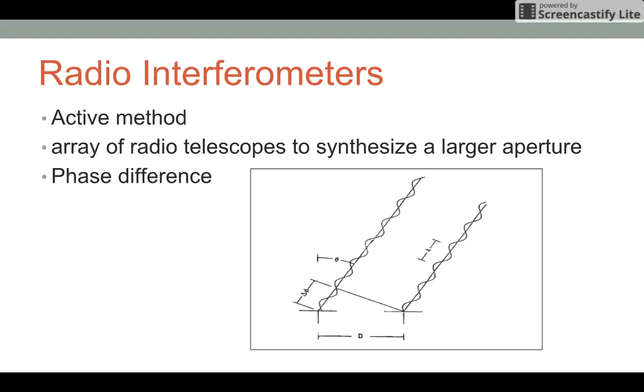As seen by this picture, there's the telescope on the right and the telescope on the left, both receiving the same radio waves from the satellite. The one on the right is going to receive the wave before that of the one on the left and the distance is shown as delta phi on the image.